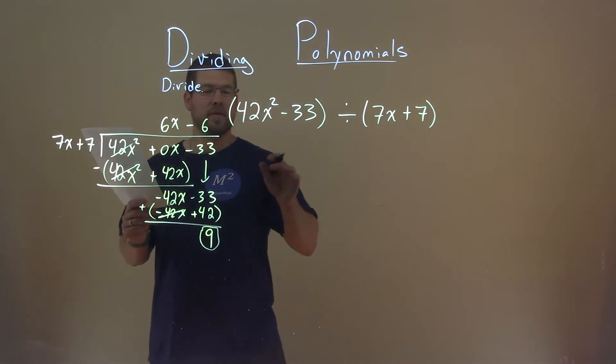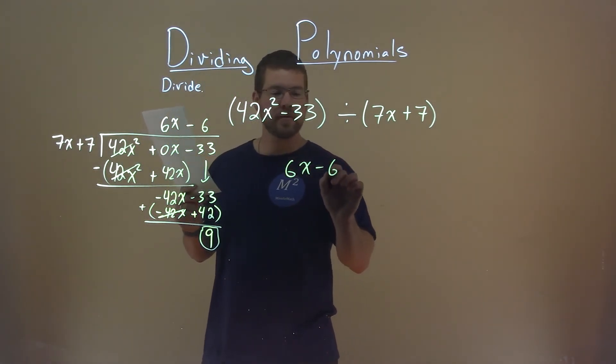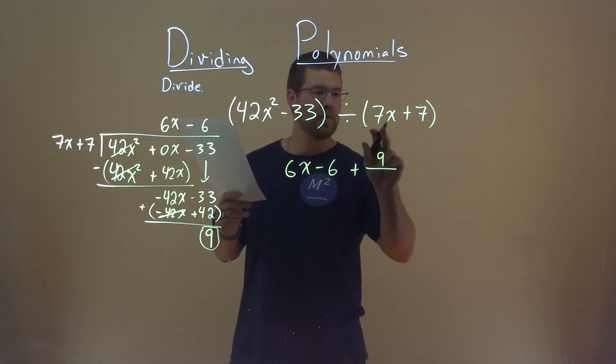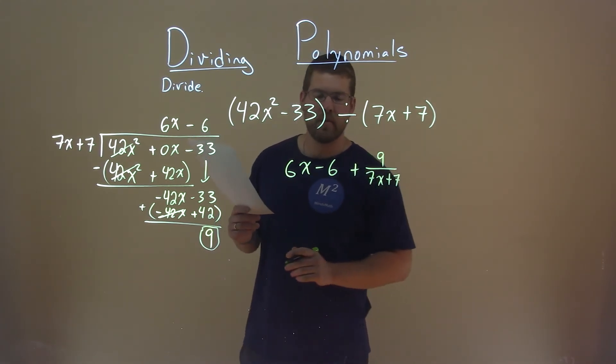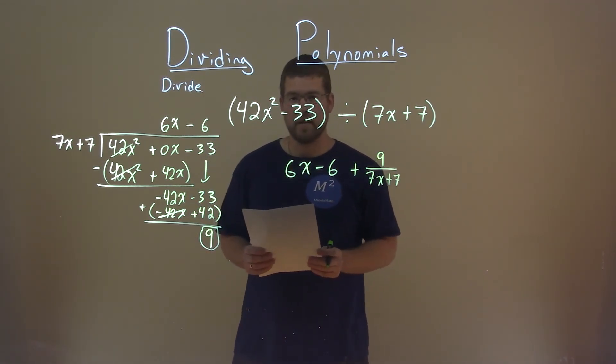So let's translate this to our answer. Bring this down. 6x minus 6 here. Then we're going to add our remainder, 9 over what we're dividing it by, 7x plus 7. And there we have it. 6x minus 6 plus 9 over 7x plus 7 is our final answer.